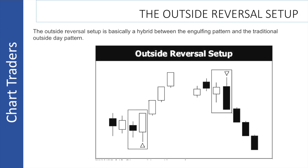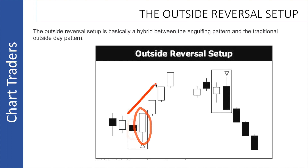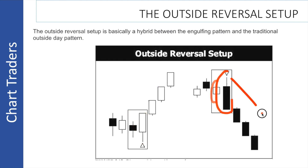The outside reversal setup is basically a hybrid between your angles and pattern, and traditionally an outside day pattern. For a bullish setup, you have a red candle followed by a green candle. For a bearish setup, you have a green candle followed by a red candle — downside possible.